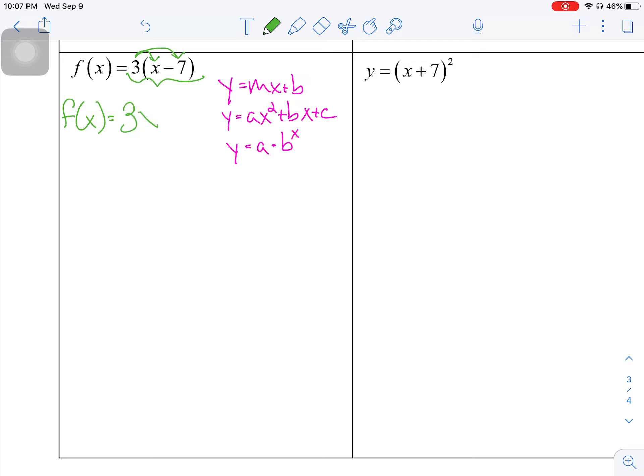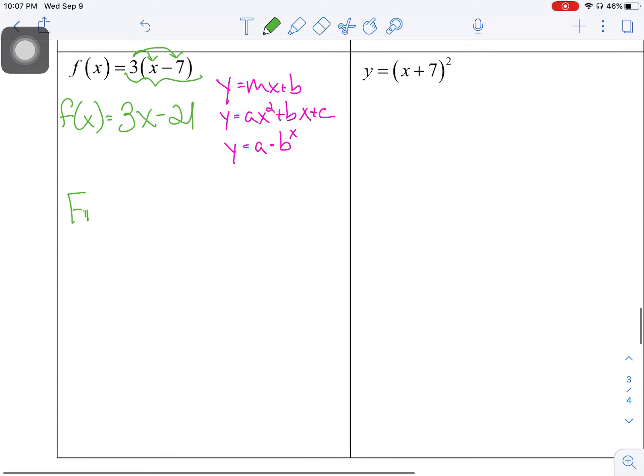So f of x is equal to 3x minus 21. So I'm going to look at this expression, and I recognize this is a first degree equation, which means it is linear. So it very easily falls into the y equals mx plus b slope intercept form. It is definitely part of the linear function family.